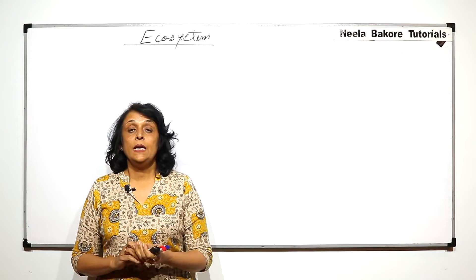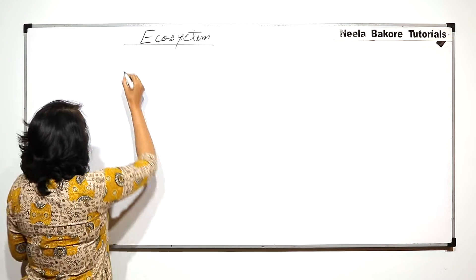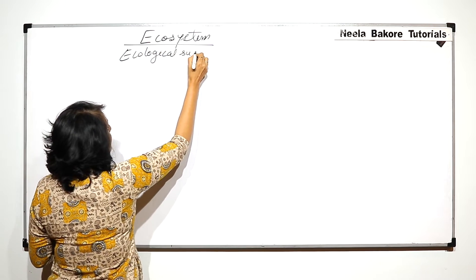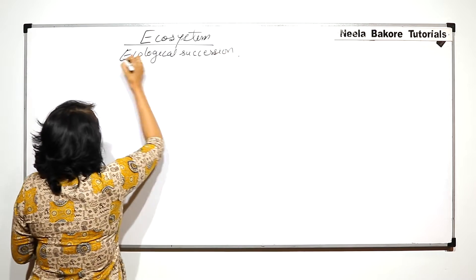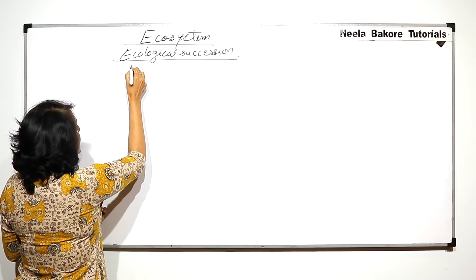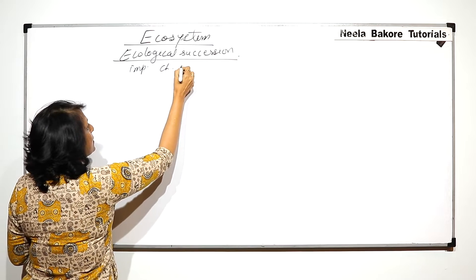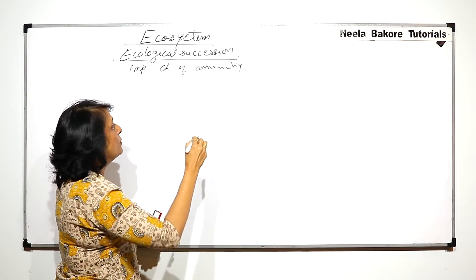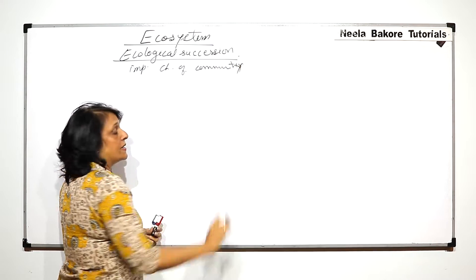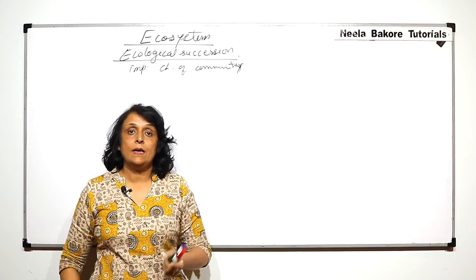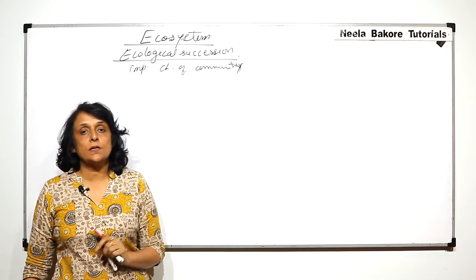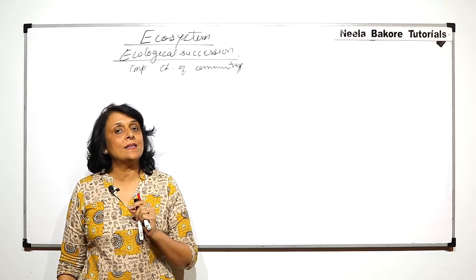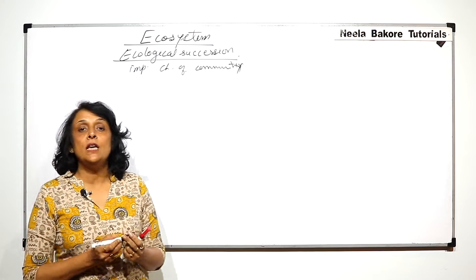We will now talk about ecological succession. Ecological succession is an important characteristic feature of communities. This succession is very important to understand. Ecological succession basically means there is a change in the composition and structure of that particular ecosystem.